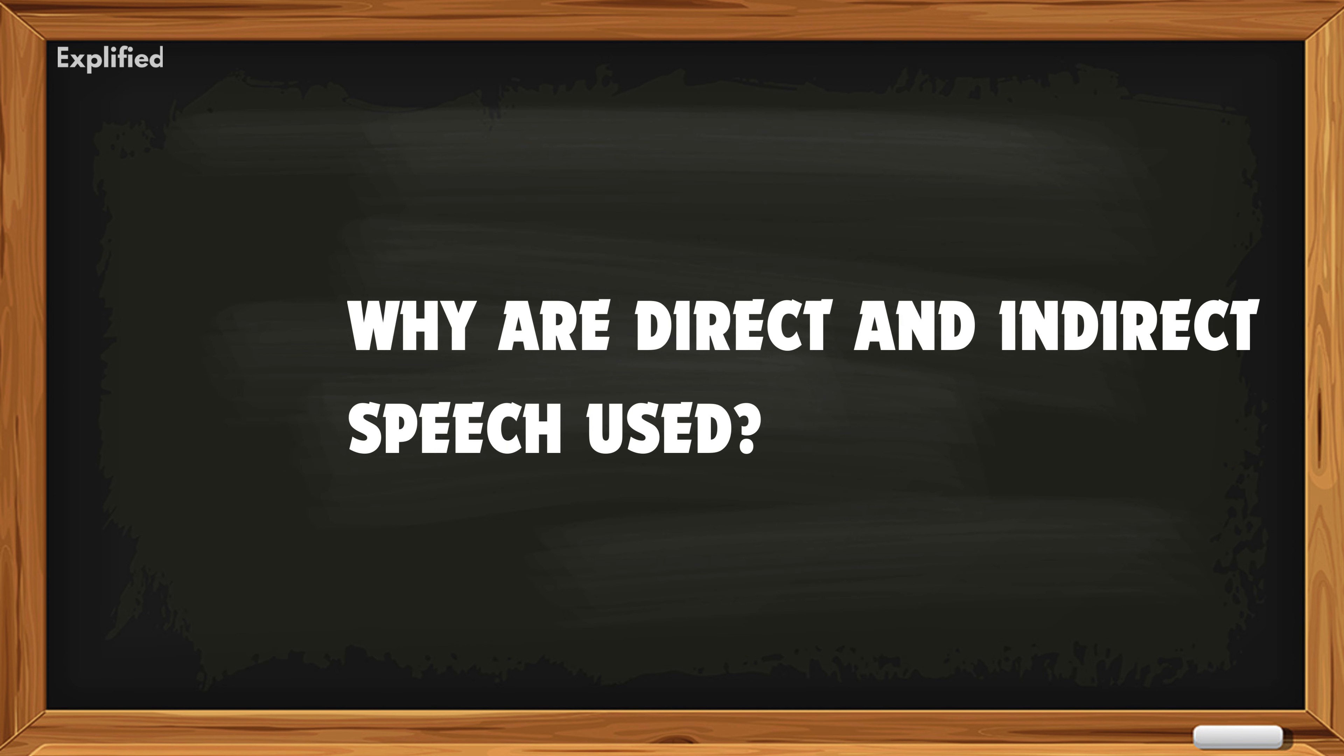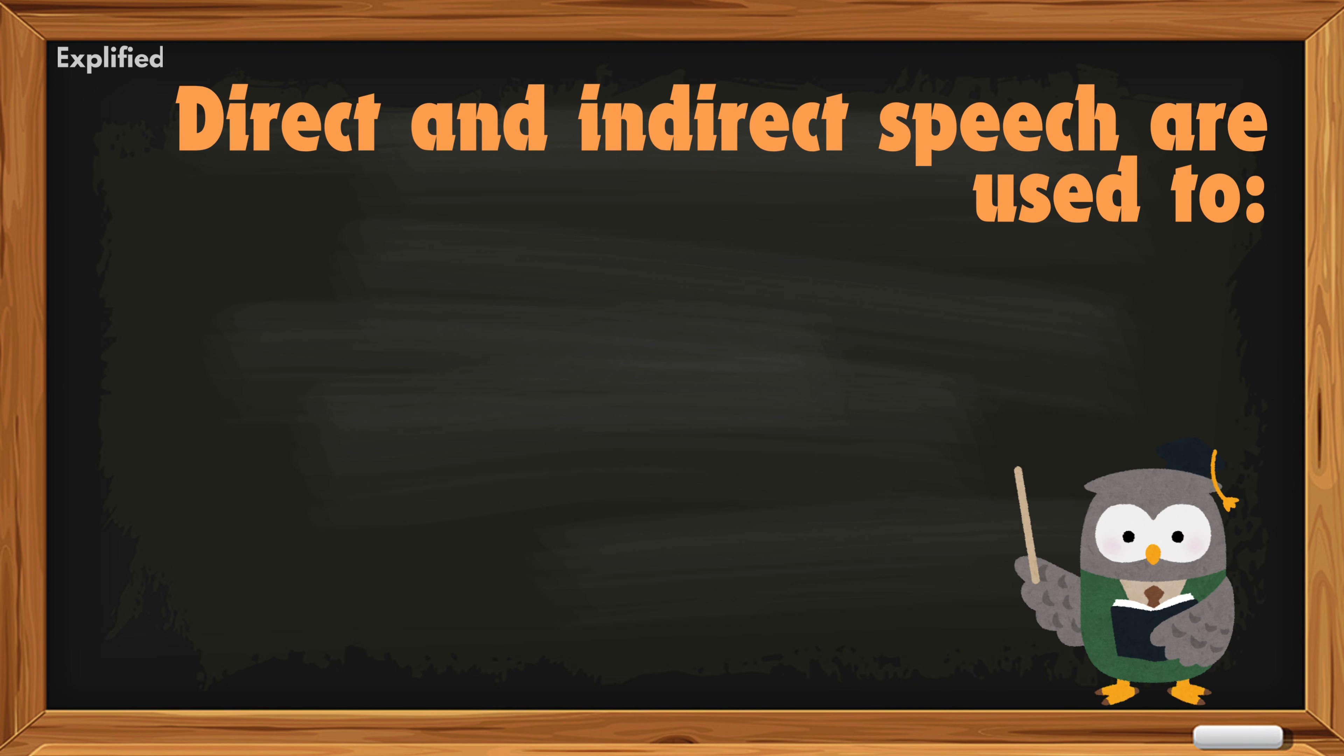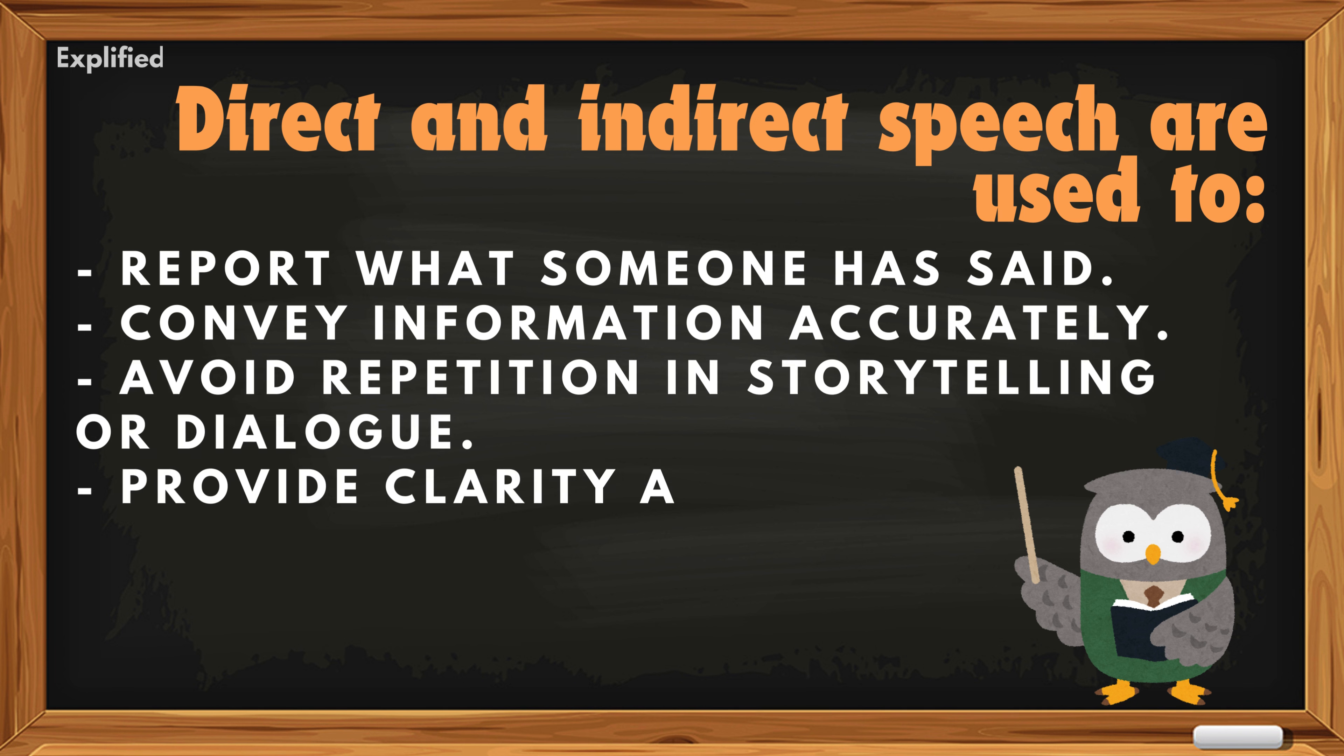Why are direct and indirect speech used? Direct and indirect speech are used to report what someone has said, convey information accurately, avoid repetition in storytelling or dialogue, and provide clarity and context in communication.